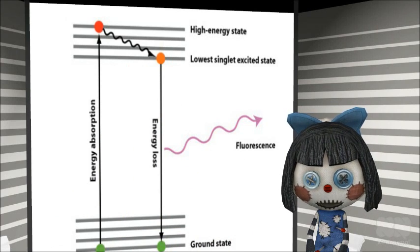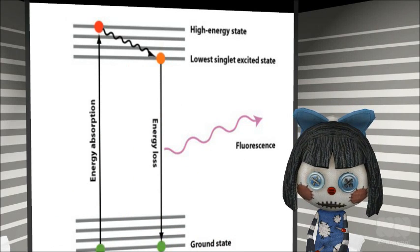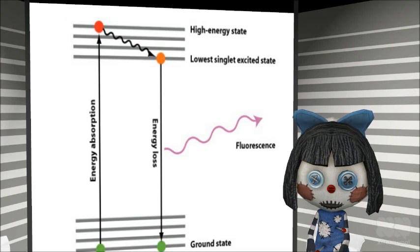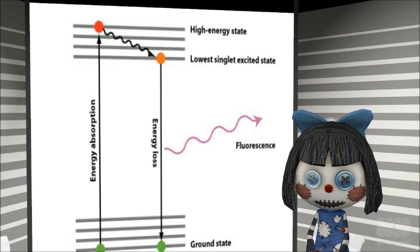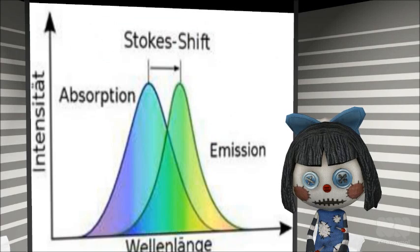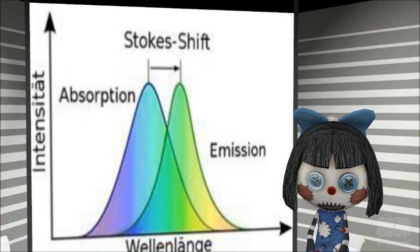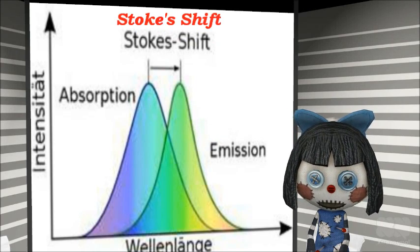Therefore, fluorescence spectrum possesses a lower frequency and a longer wavelength relative to the absorption spectrum, resulting in the shift between the wavelengths of fluorescence and absorption as denoted as Stoke shift.